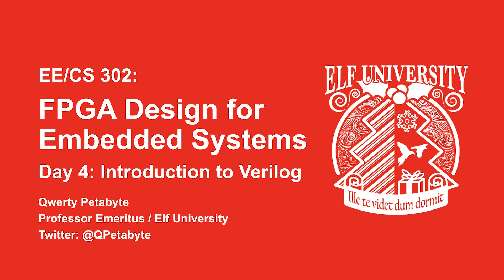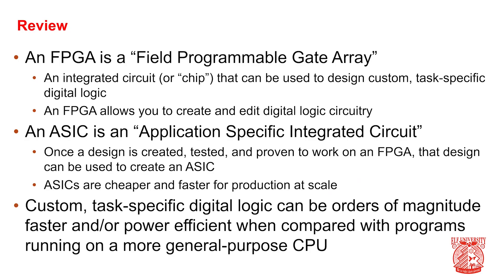Let's start off by reviewing some of the information we've already covered. An FPGA is a field programmable gate array — an integrated circuit or chip that can be used to design custom task-specific digital logic. An FPGA is almost magical in that it allows you to create and edit actual digital logic circuitry. Its close cousin, the ASIC, is an application-specific integrated circuit. Once a design is created, tested, and proven to work on an FPGA, that design can then be used to create an application-specific IC. ASICs are cheaper and faster for production at scale. Custom task-specific digital logic can be orders of magnitude faster or more power-efficient when compared with software running on a more general-purpose CPU.